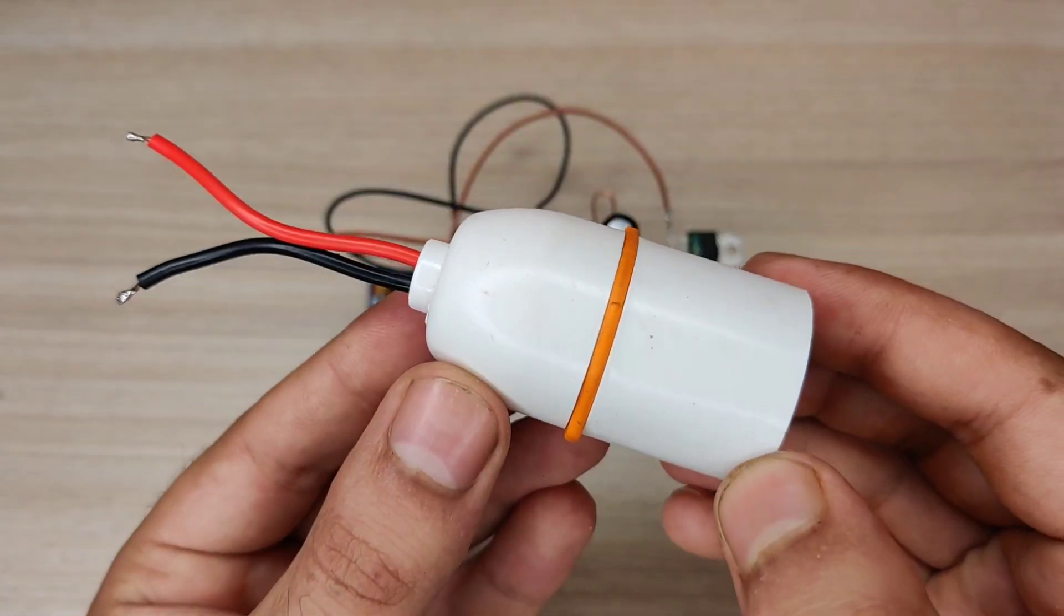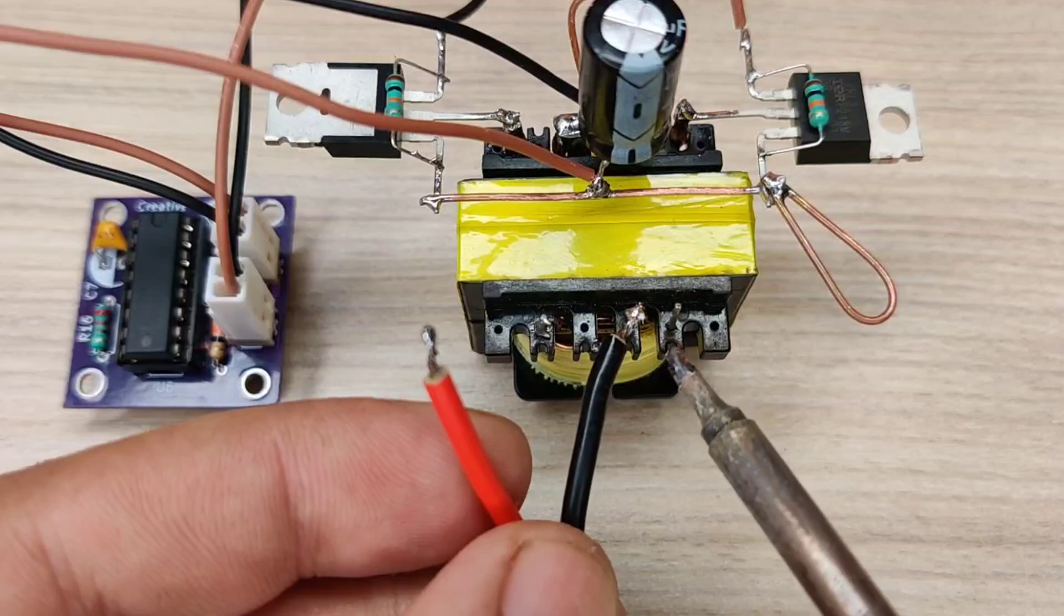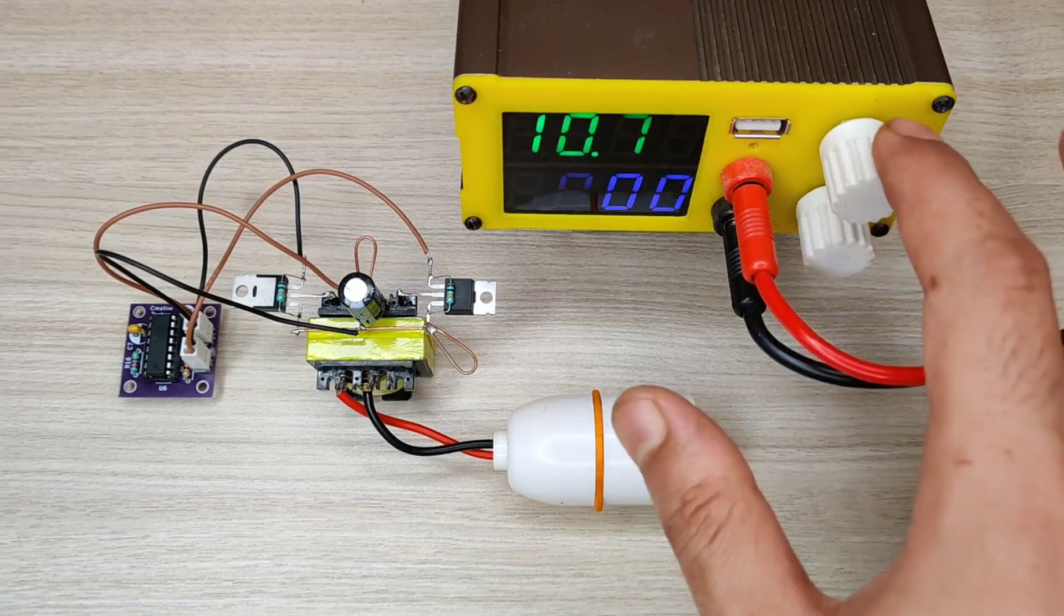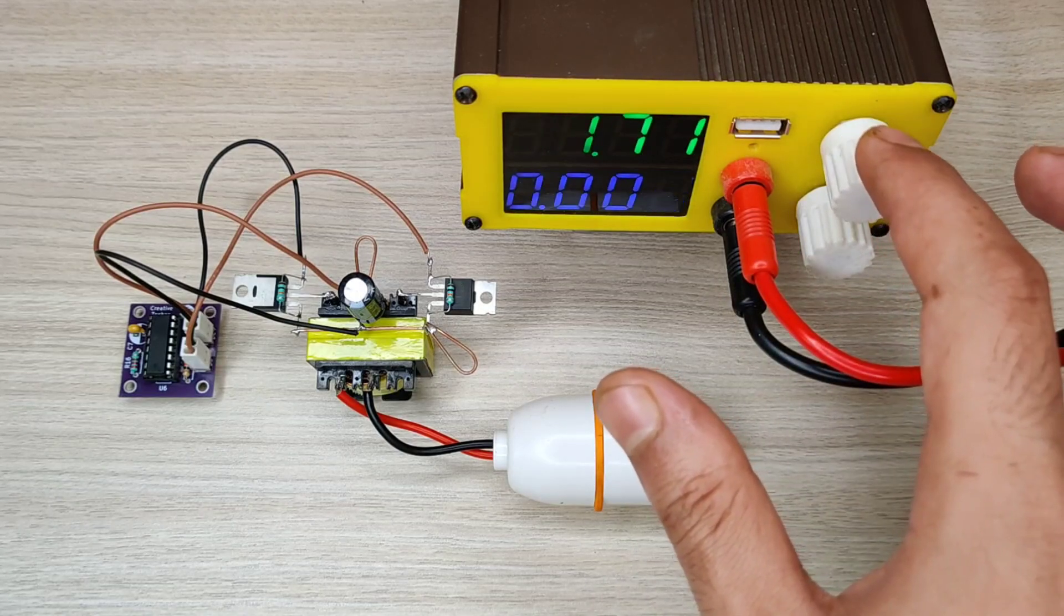Now connect the lamp holder with secondary winding of transformer. I used lab bench power supply and set voltage of 12.5 volts.